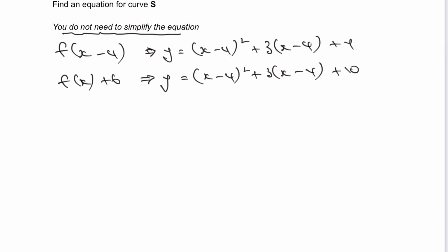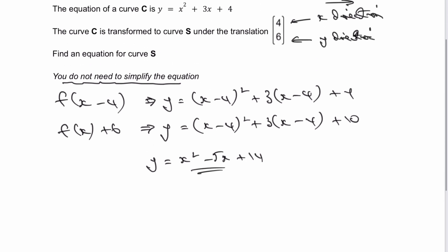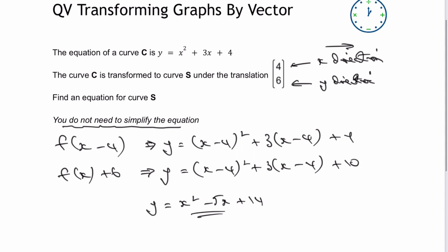So what I would do is I would just also write this as y equals x squared minus 5x plus 14 which is what you'll get if you expand out the brackets there and that would be perfectly fine for this question.